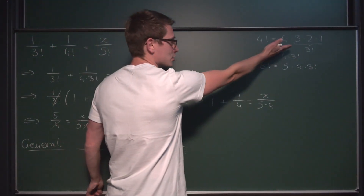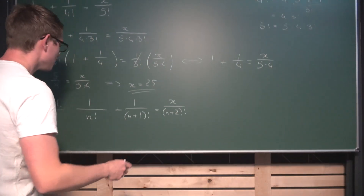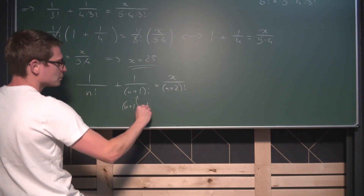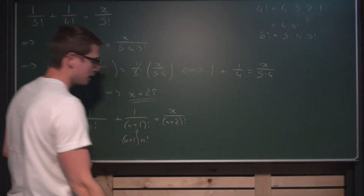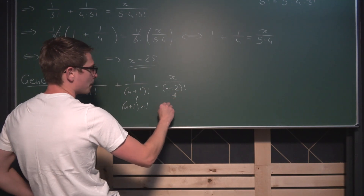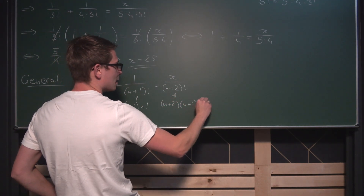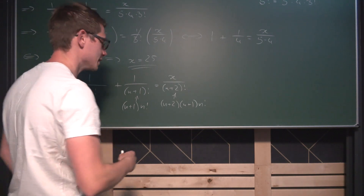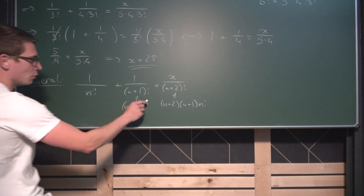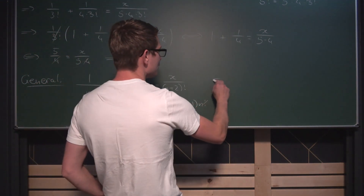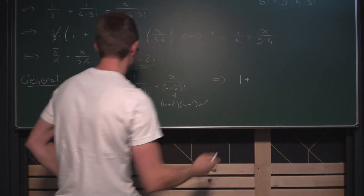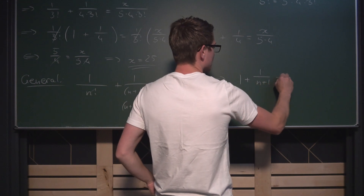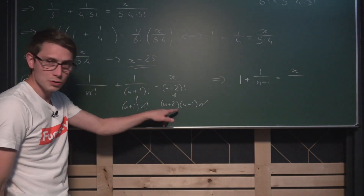Now we take a look at the recursive definition once again. We can rewrite n plus 1 factorial as n plus 1 times n factorial, and n plus 2 factorial as n plus 2 times n plus 1 times n factorial. Going through the same process, since n factorial is never equal to zero, we can cancel out the 1 over n factorial on every term. This leaves us with: 1 plus 1 divided by n plus 1 is equal to x divided by n plus 2 times n plus 1.